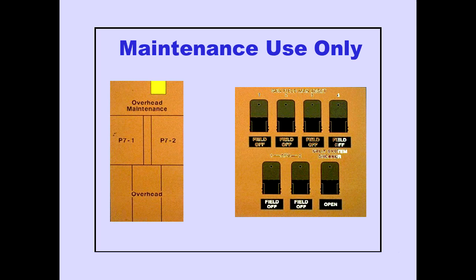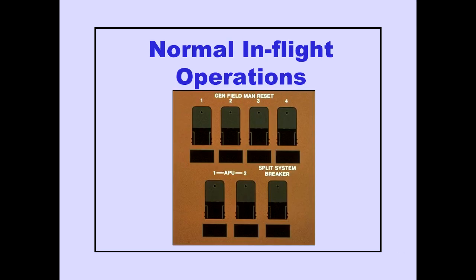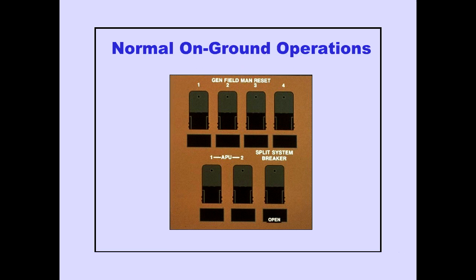An electrical maintenance panel, located on the overhead maintenance panel, is provided for maintenance use only. For normal in-flight operations, all switch guards should be down and all indicator lights off. For normal on-ground operations, with either external power or an APU generator powering each side of the synchronous bus, the split system breaker light is illuminated.